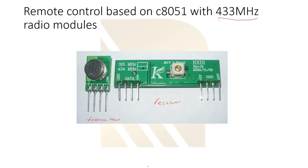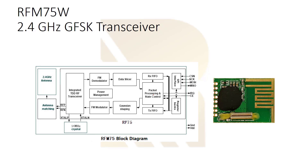These are two separate modules: this circuit only transmits signals and this one only receives. This is another example of a transceiver, which we will explain. As you can see, there are lots of blocks inside, including the antenna, antenna matching, modulator, demodulator, and more.